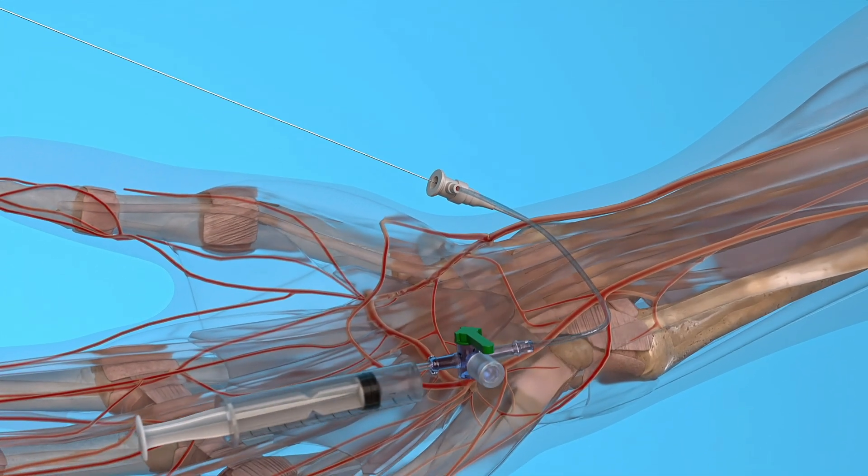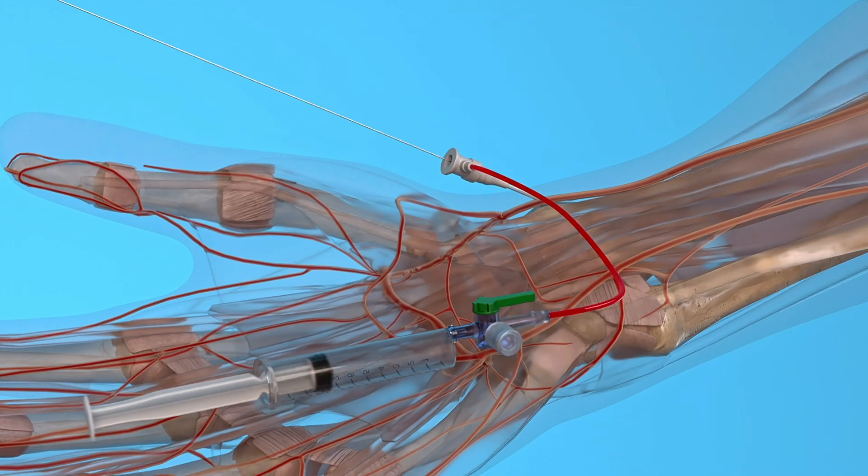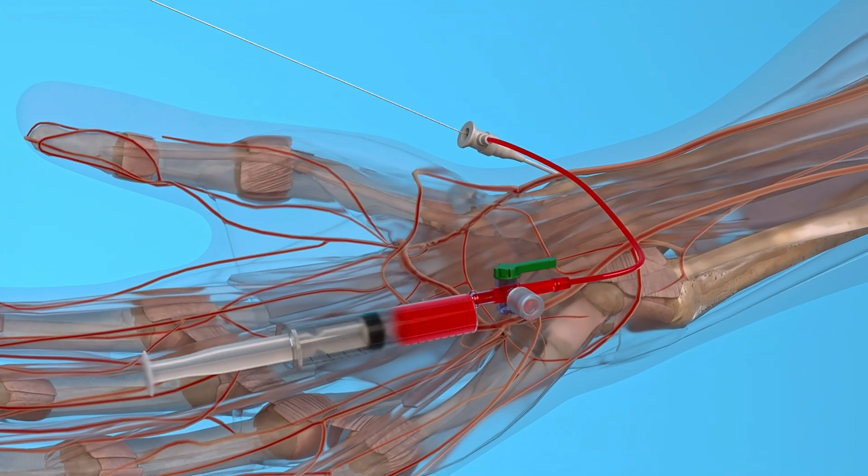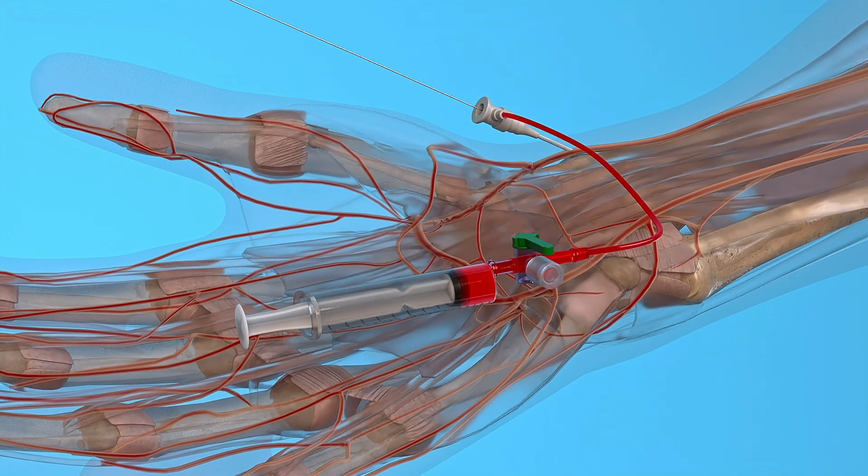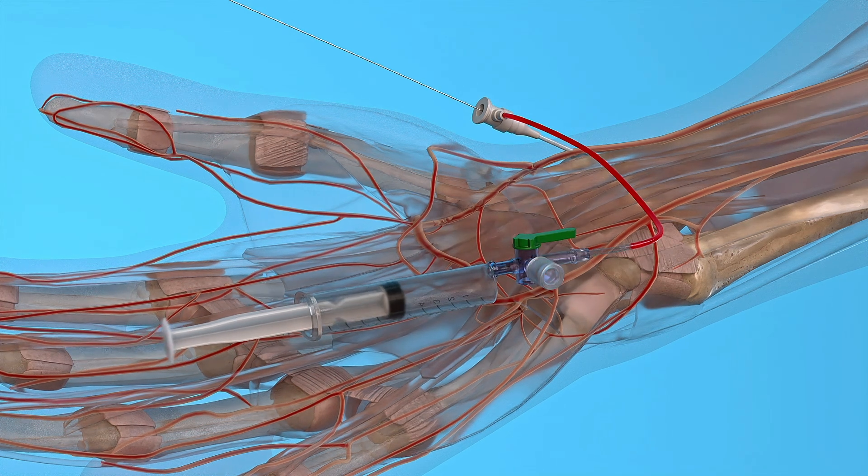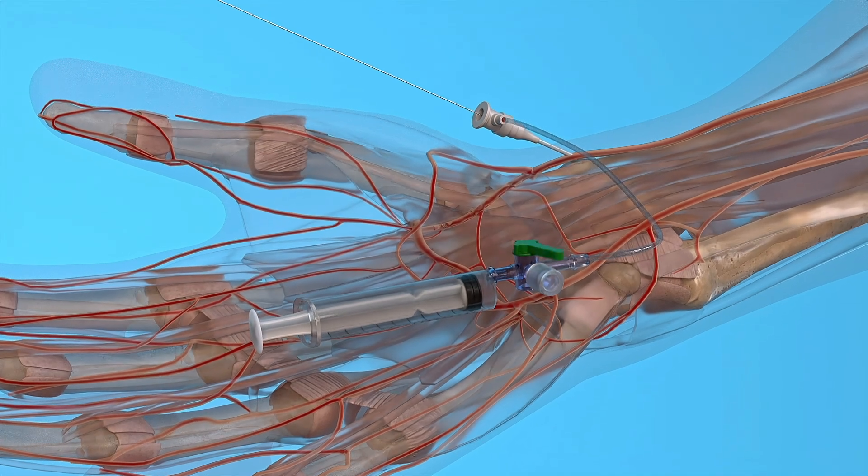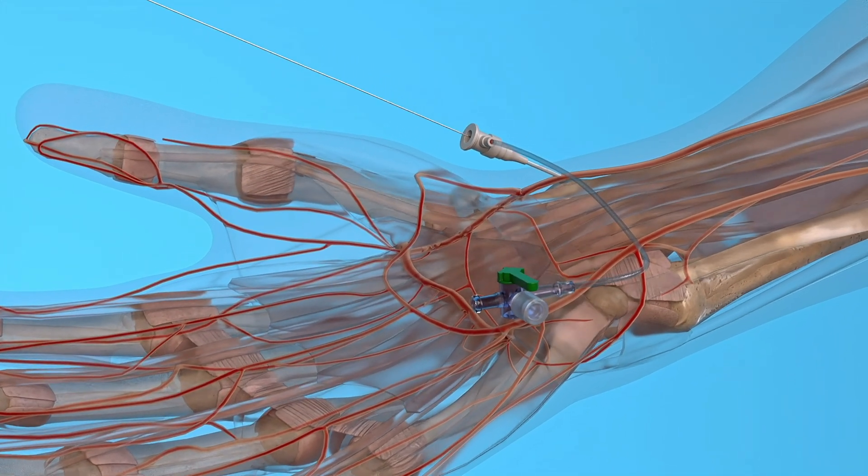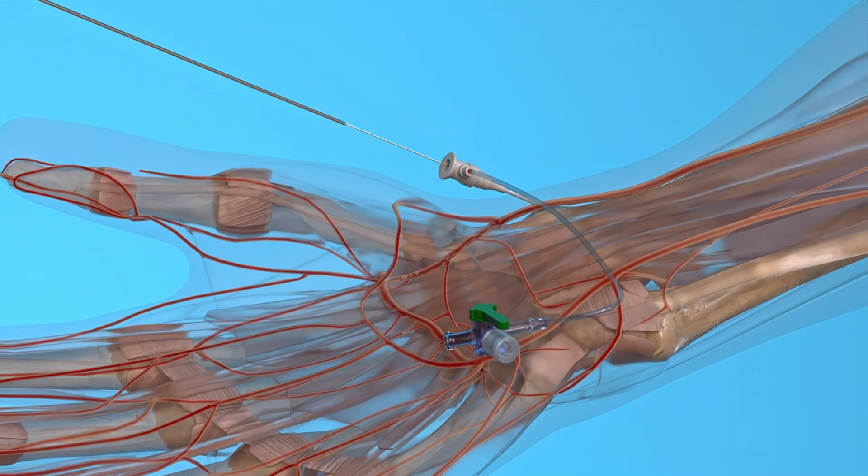The wire is then removed. After checking the patency of the introducer, it is flushed. Then a catheter is inserted.